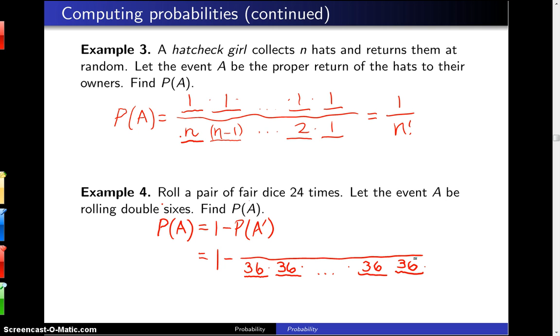Now for the numerator, remember we are finding the probability of not rolling double sixes in those 24 rolls. On the first roll there are 35 ways to not roll a double six, 35 ways on the second roll, and continuing through all 24 rolls there are 35 ways on each toss to not roll a double six.